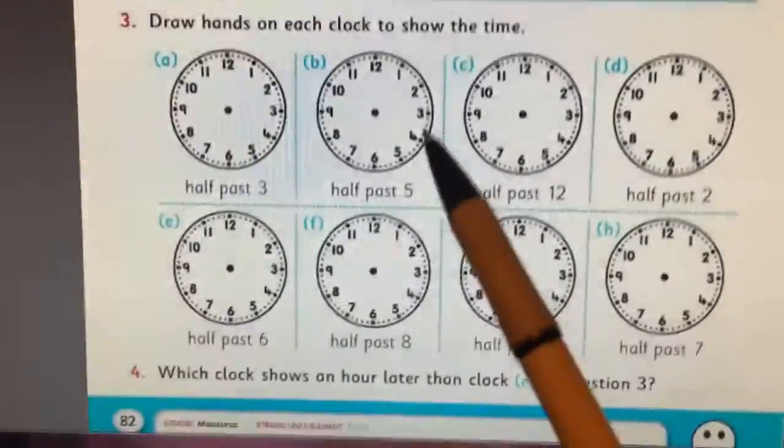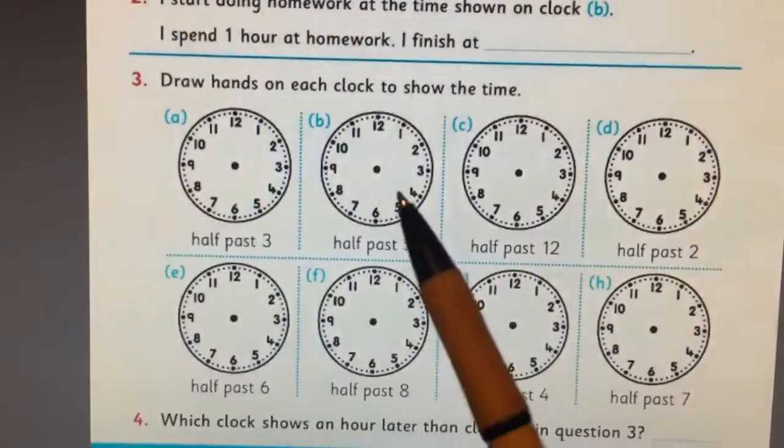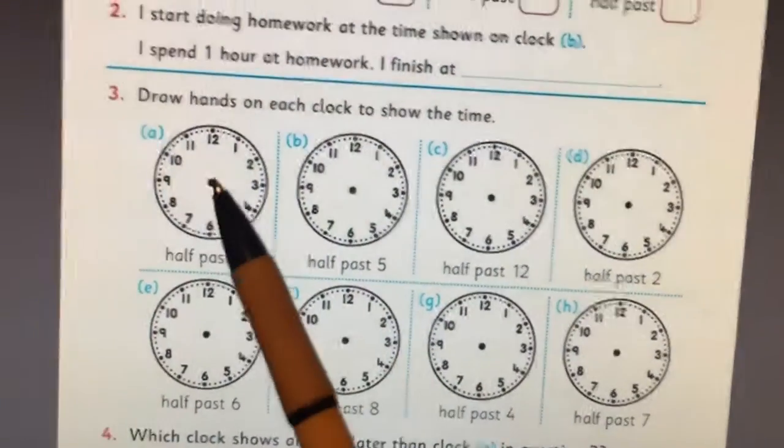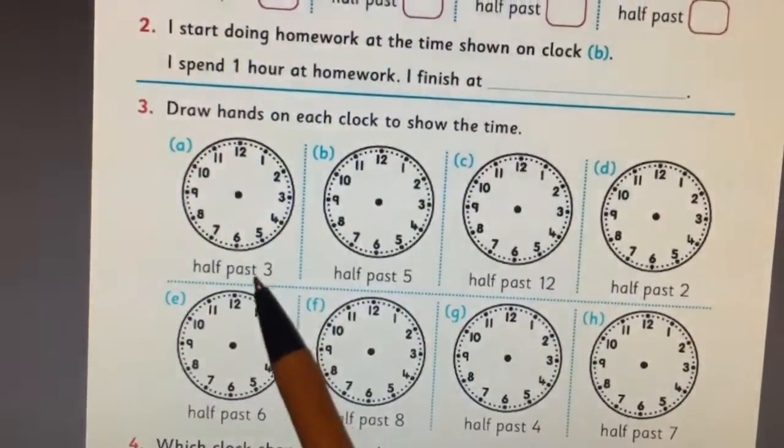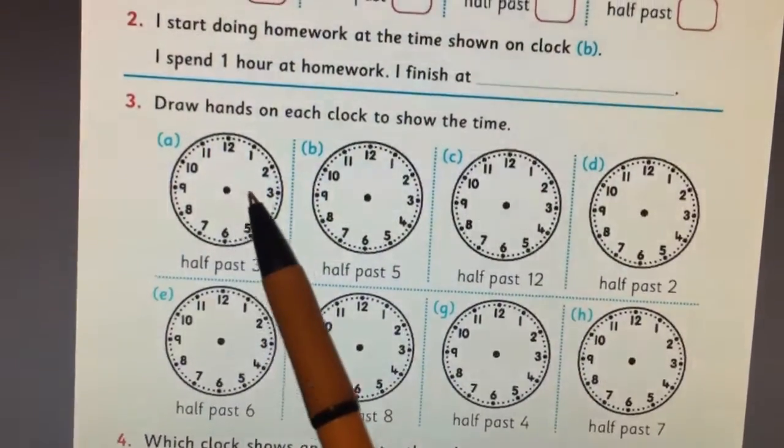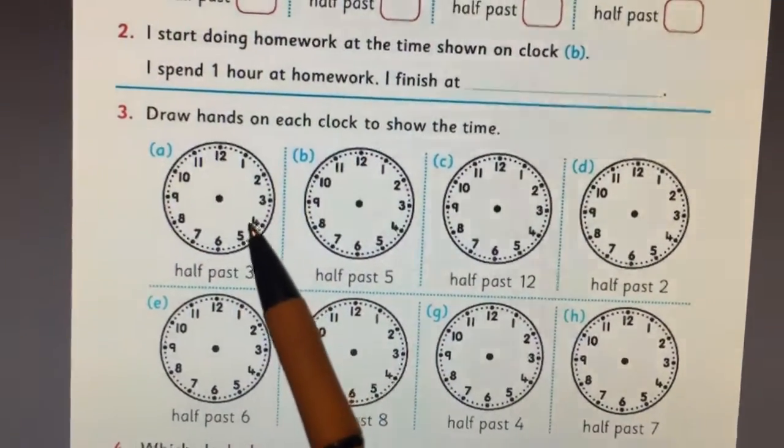Now the next part, and this is the part I really want to see from you, is can you draw the half past with the big hand pointing down to the six. But when it's half past three, the small hand must be between three and four.